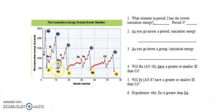So here's a chart of the first ionization energies versus atomic number. Just to note the first ionization energy, that's how hard it is to take away the first electron from a neutral atom. So on this axis, we have the first energy and here we have the atomic number. So what element in period two has the lower ionization energy? Period three. So here's period one. Here we have period two. Here we have starting period three.